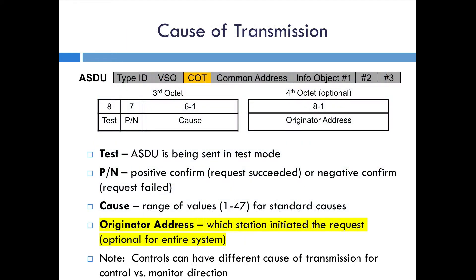There are also some other bits included so you can put the ASDU in test mode, or indicate a positive or negative confirmation for a request. There's also an option to include the address for the station which originated the request, but this isn't very commonly used.